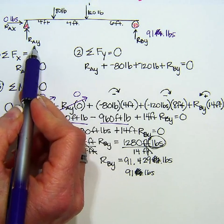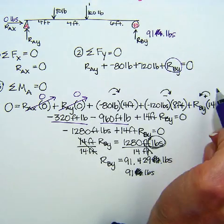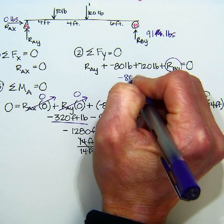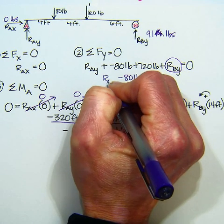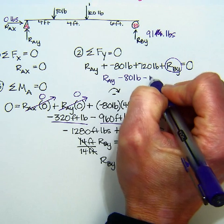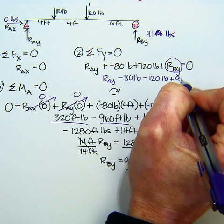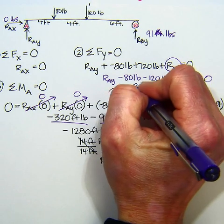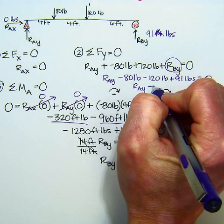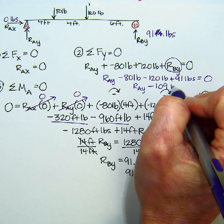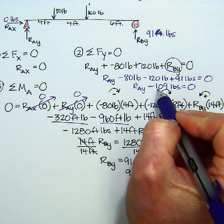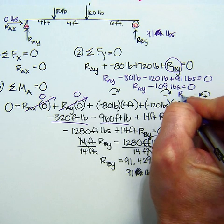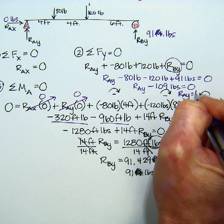So now we still need to know what RAY is, but now I have a value for this RBY. So I have negative 80 pounds RAY minus 80 pounds minus 120 pounds plus 91 pounds equals 0. So I end up with RAY minus 109 equals 0. So when I move the 109 over to the other side, I'm left with RAY equals 109 pounds.